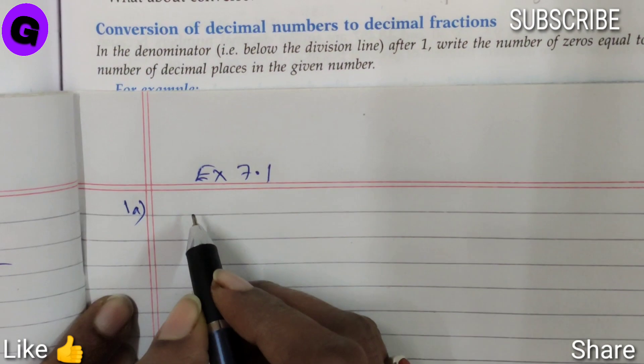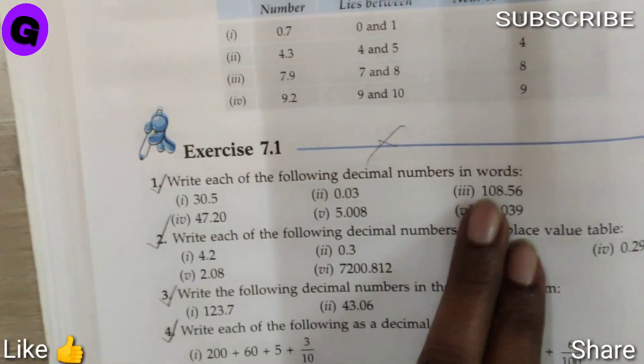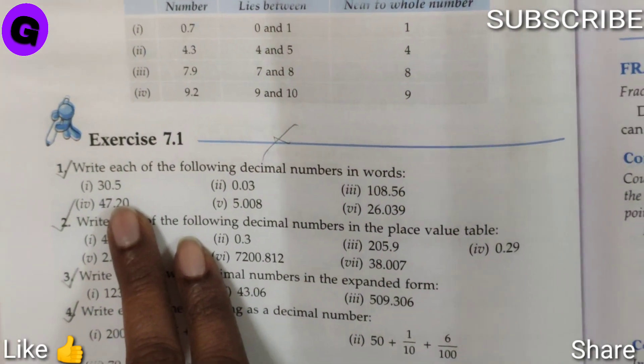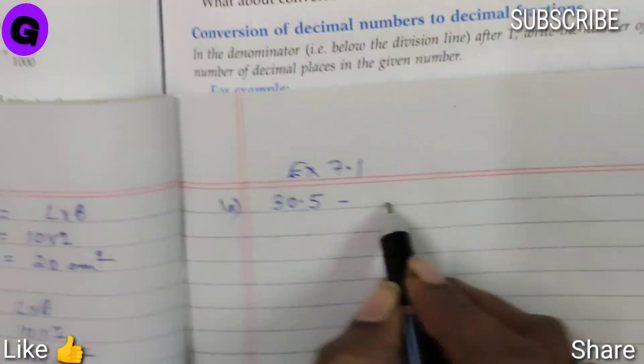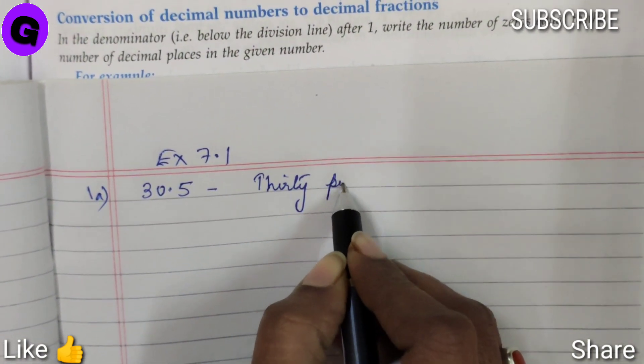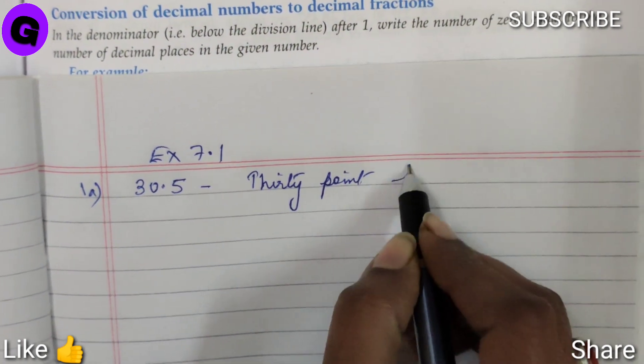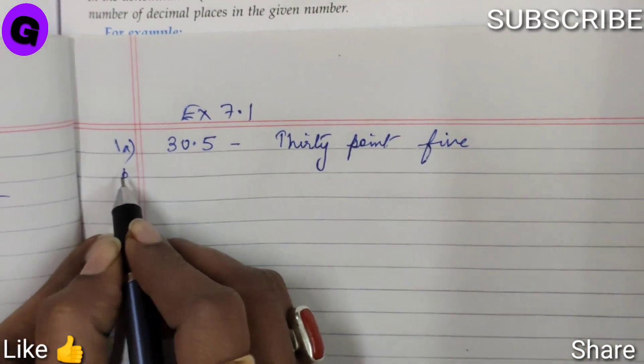First part says we have to write the following decimal number in words. So the first is 30.5, which can be written as 30.5. Number B.